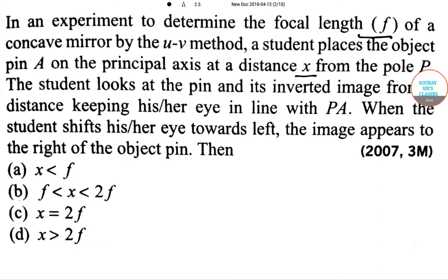The student looks at the pin and its inverted image from a distance, keeping his or her eye in line with PA. When the student shifts his or her eye towards left, the image appears to the right of the object pin.